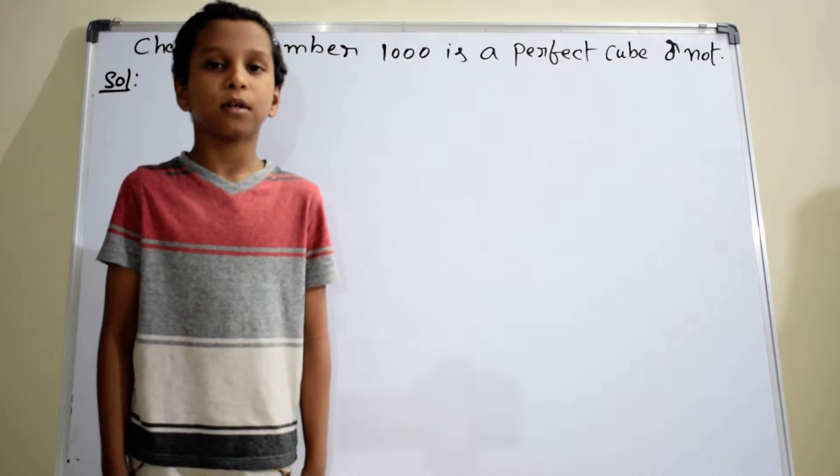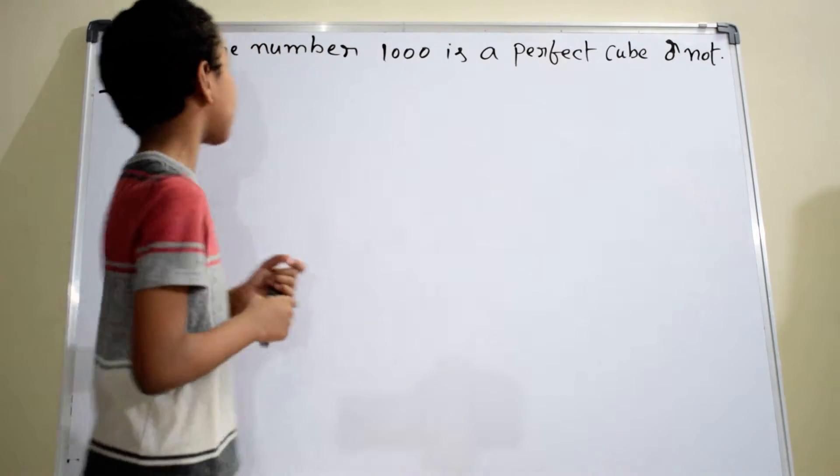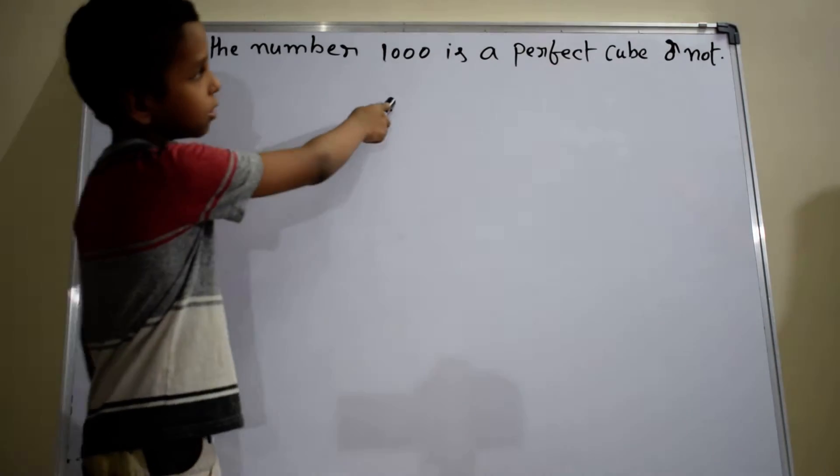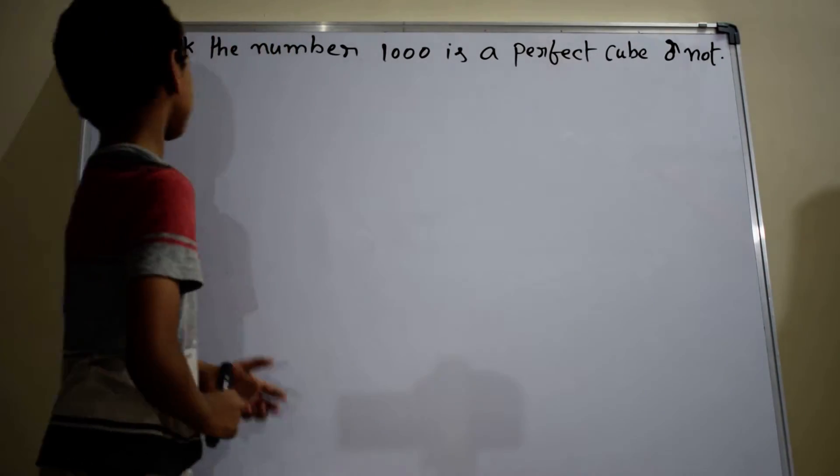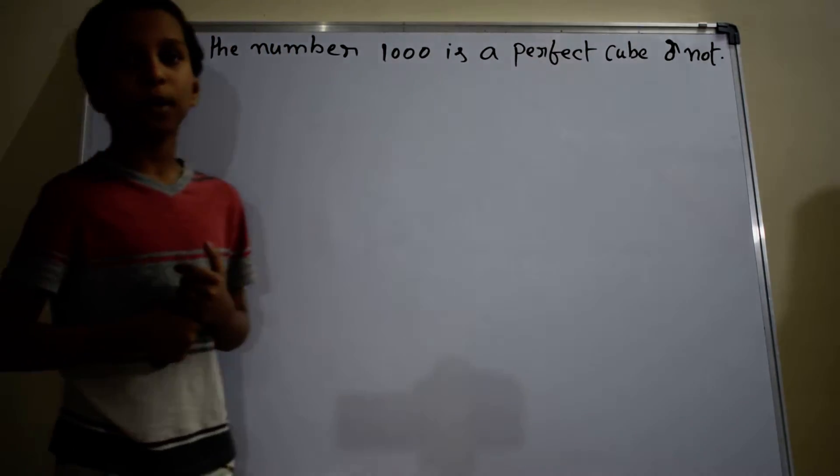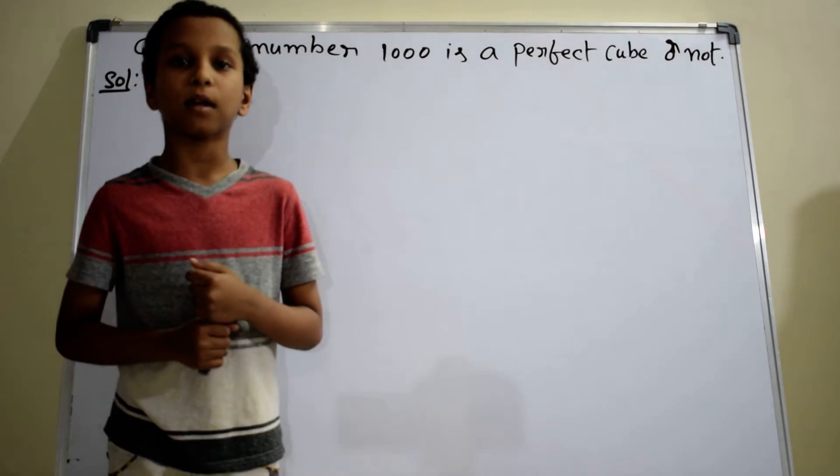This is the solution of the given problem. The problem is: check if the number 1000 is a perfect cube or not. Solution: we will solve it by using prime factorization method.